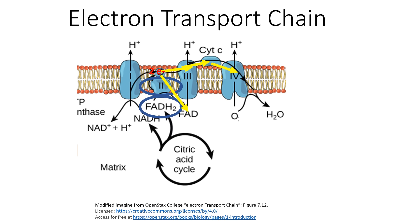This means the electrons from FADH2, being carried by coenzyme Q, only result in hydrogen ions being pumped by complex three and complex four, versus the electrons from NADH, which result in hydrogen ions being pumped by complex one, three, and four.